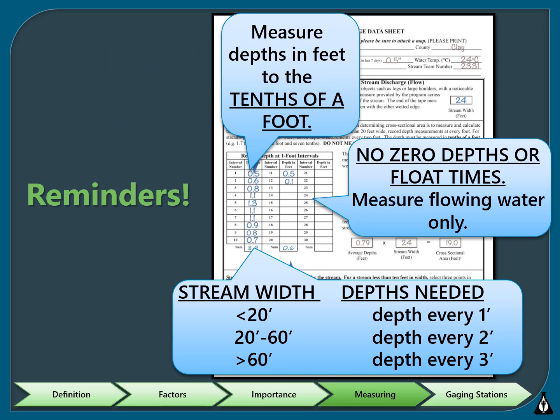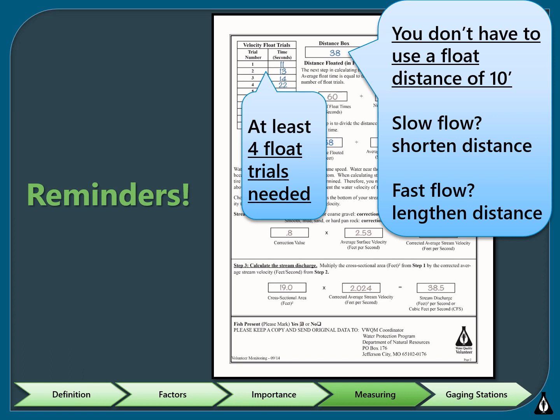There are a few common errors to watch for with stream discharge measurement. All width and depth measurements must be in tenths of a foot, not in inches. Do not report any zeros — if a zero is reported for depth, that means there is no water; if zero is reported for a velocity float trial, that means the water is not flowing, so please adjust where you are measuring. Double check to make sure you have recorded enough depths for your stream width, as data cannot be used if too few depth measurements are recorded. The distance floated does not have to be 10 feet, but remember to record whatever distance you decide to use. Finally, remember to collect at least four float trials.